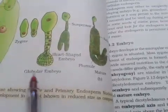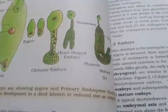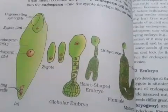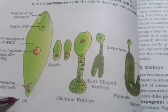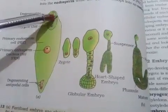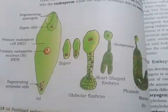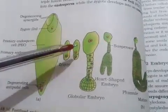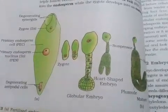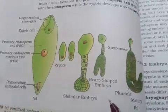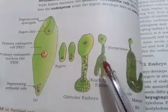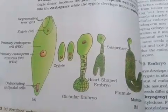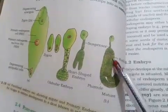In dicotyledon seeds, at one end eggs are present surrounded by synergids, then polar nuclei, and on the other side antipodal cells are formed. When fertilization takes place, the synergids disappear and the antipodal cells start to degenerate. We are left with the zygote and the endospermic nuclei. The zygote first undergoes cellular division resulting in two cells, followed by further divisions forming a globular embryo and then a heart-shaped embryo — characteristic features of dicot seeds.